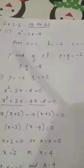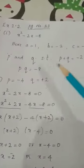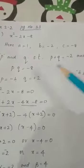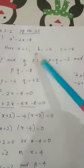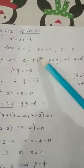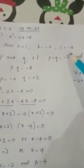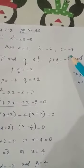We can write the values of a, b, and c. a is equal to 1, b is equal to minus 2, and c is equal to minus 8.